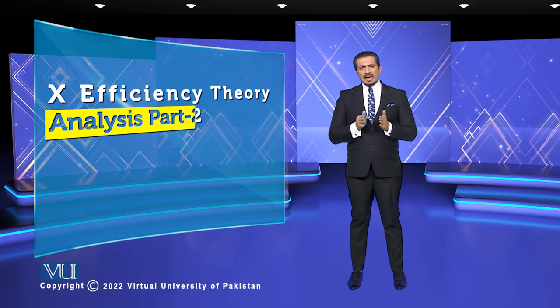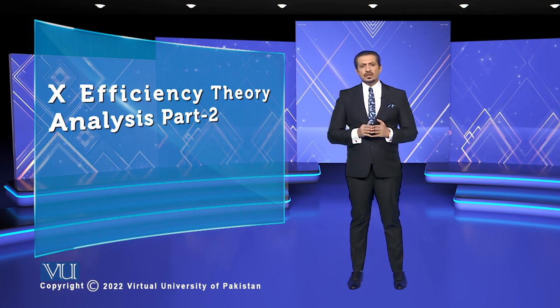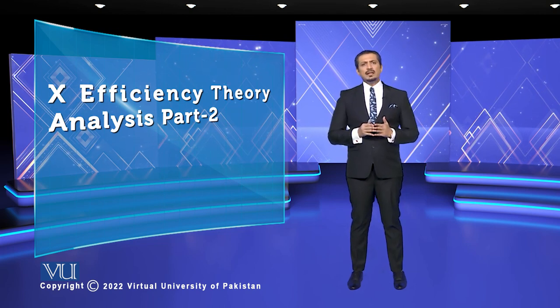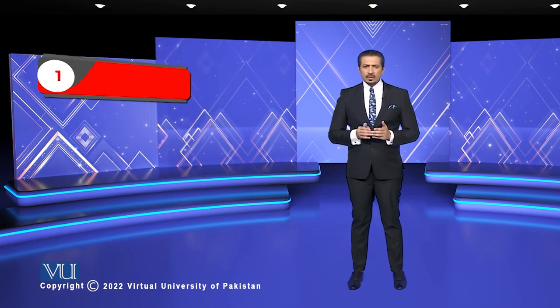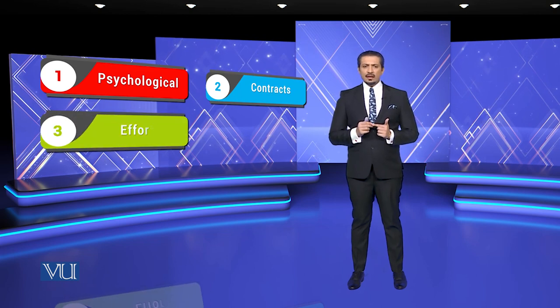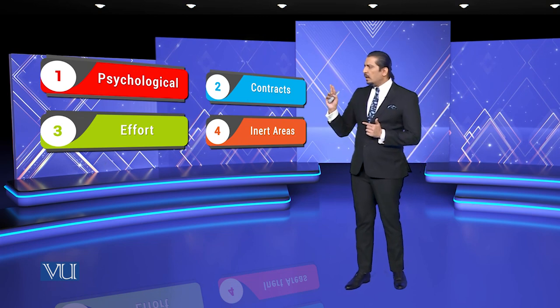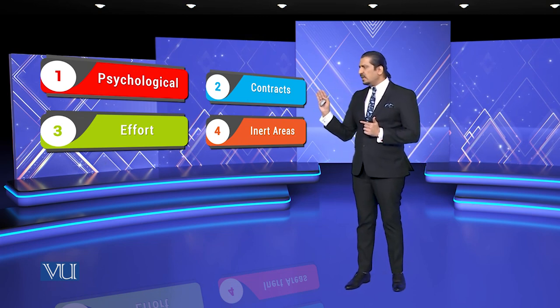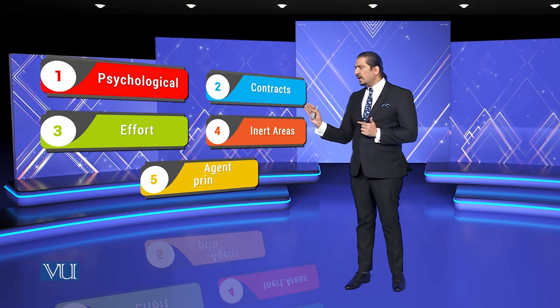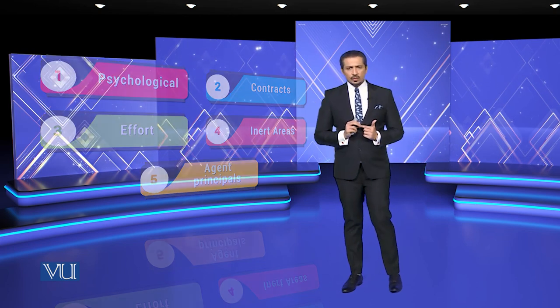Consolidating, when we reach the analysis of X-efficiency, we also see a few more considerations, which I can largely categorize into four units: one is psychological, second is contract, third is effort, fourth is inert areas, and fifth is agent-principal. It is very important to understand these four to five things.